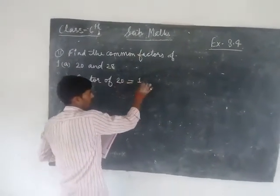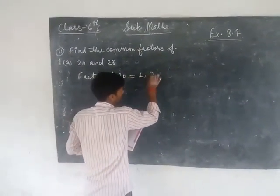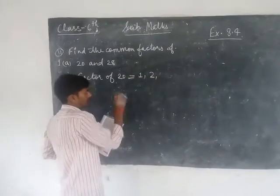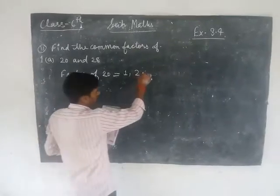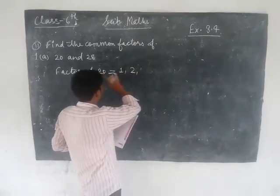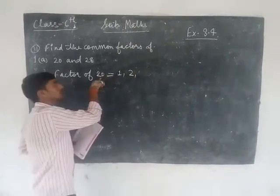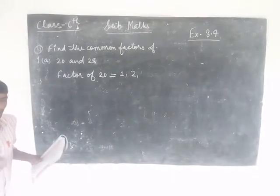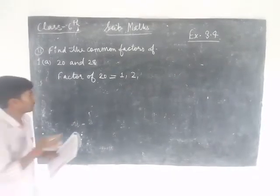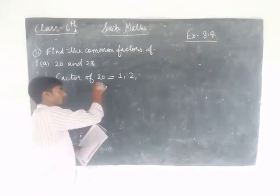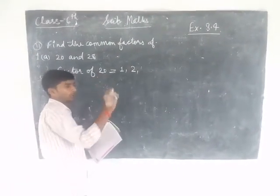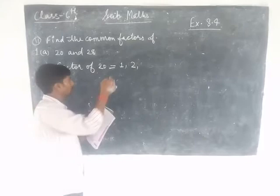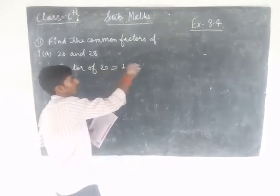The last digit is 0, so 20 is divisible by 2. So 2 is a factor of 20. Next we check 3: 2 plus 0 equals 2, and 2 is not divisible by 3, so 20 is not divided by 3. Therefore 3 is not a factor of 20.